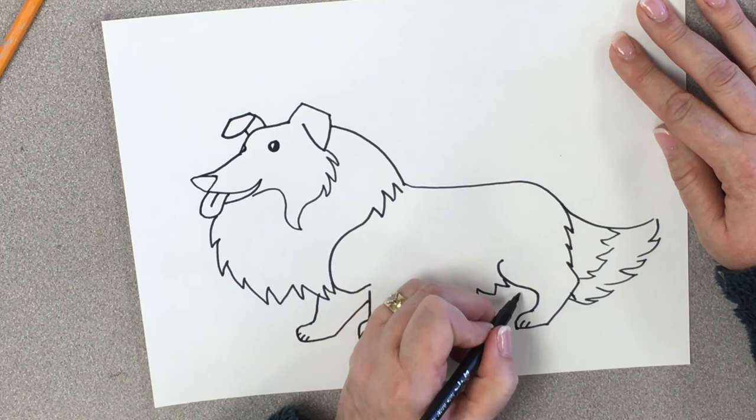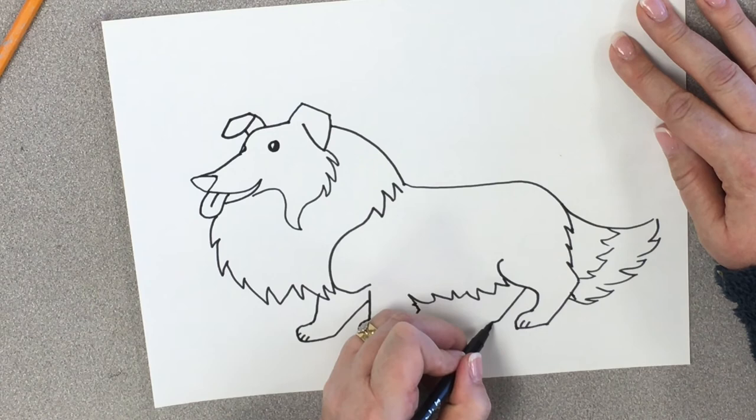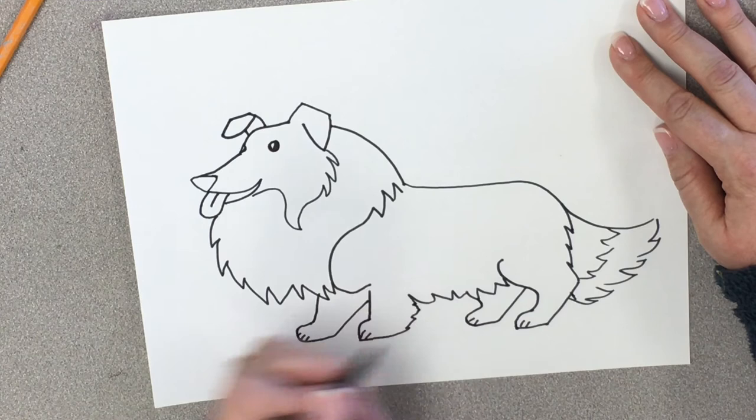Now for this back leg, we're going to come down, repeating this line here. Come up front. Come back around. There we go. Oh, it's so cute.